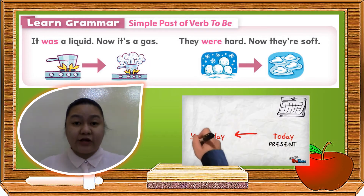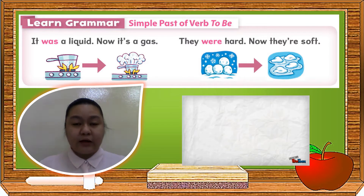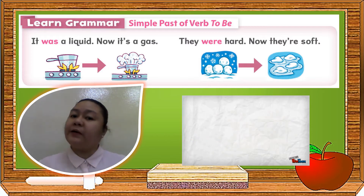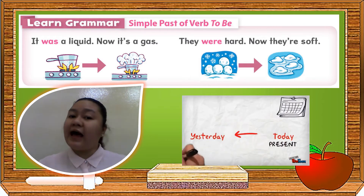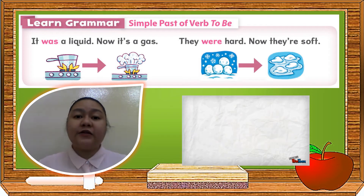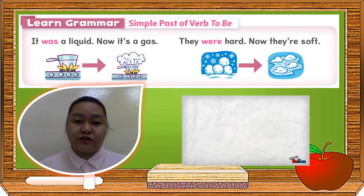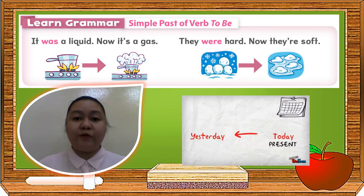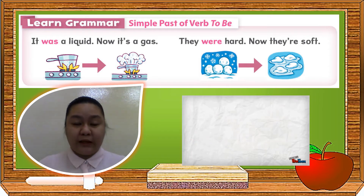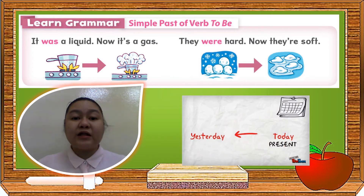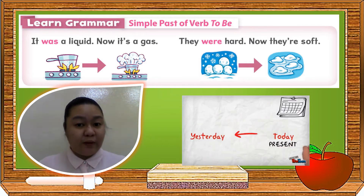Now let's go to our next lesson, which is all about simple past of verb to be. When you say simple past, these are verbs that already happened — maybe yesterday, in the morning, last week, last month, or last year. It means the action being done has already happened and is finished. For example: 'It was a liquid. Now it's a gas.' Notice the red word 'was' — that is one example used in simple past of verb to be.